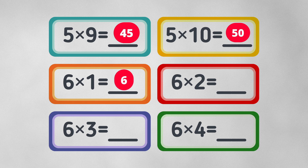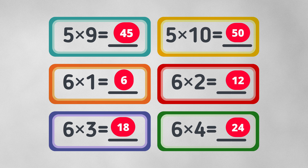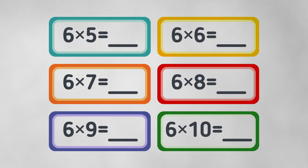Six times one equals six. Six times two equals twelve. Six times three equals eighteen. Six times four equals twenty-four. Six times five equals thirty.